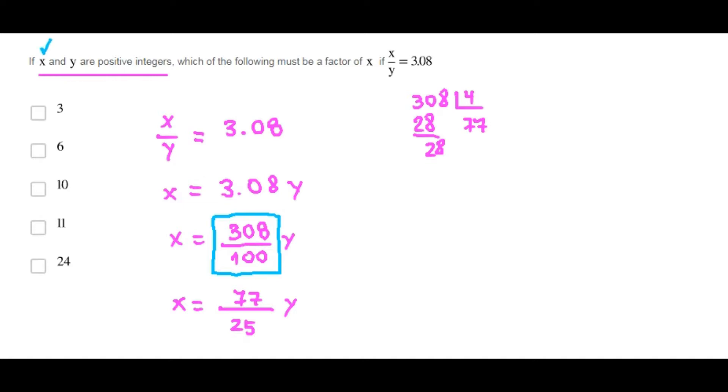Since X must be an integer, then this product must be an integer. And in order to get an integer, Y, the least value of Y must be 25.